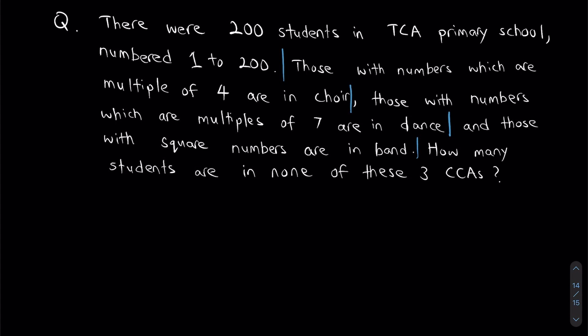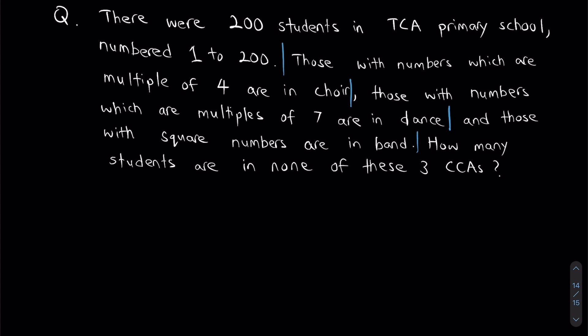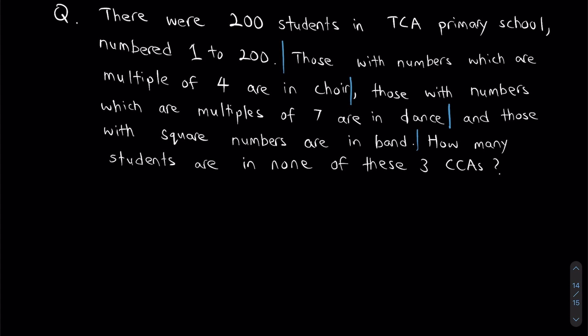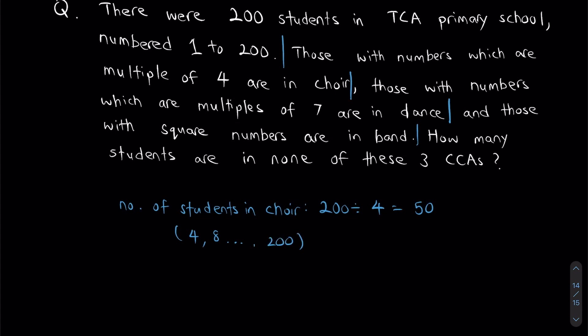I'm going to start off this question by figuring out how many students are in each individual CCA. So, let's start with the easiest one, which is, of course, choir. So, number of students in choir. This one's quite straightforward. If there are multiples of 4, I'm just going to be taking 200 divided by 4. I'm going to get 50 students. So, if you can imagine, the kind of students that will be in choir, they are like 4, 8, all the way until student number 200. All of these guys will be in choir.